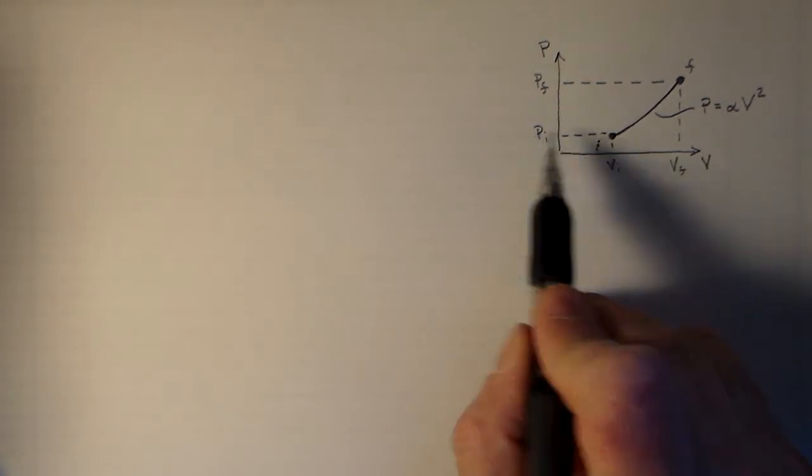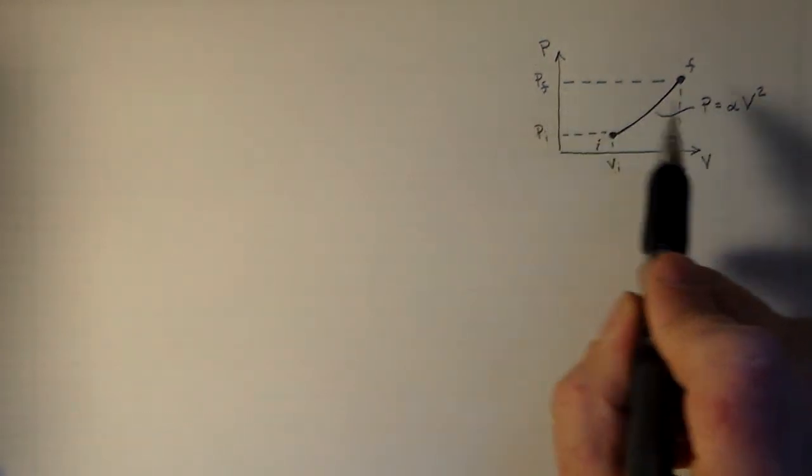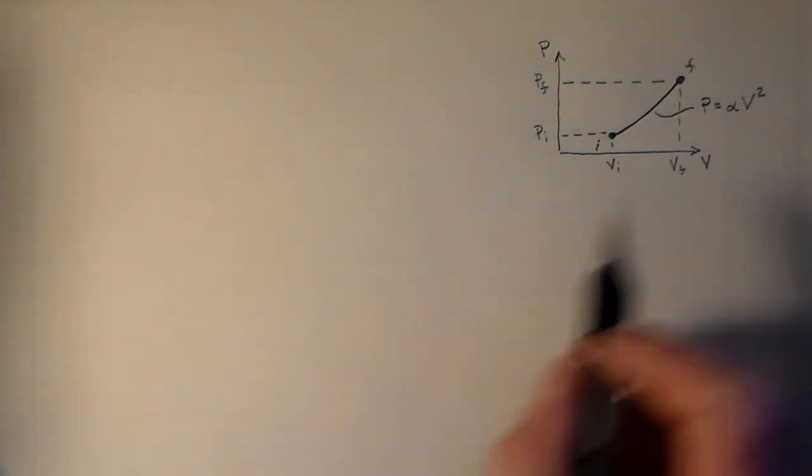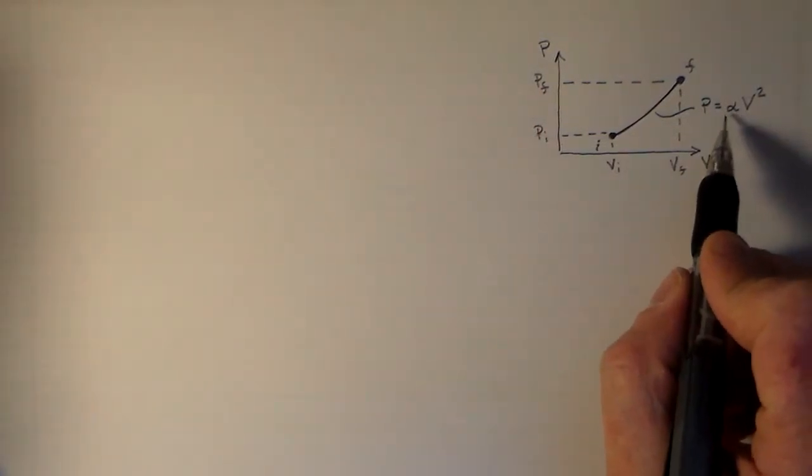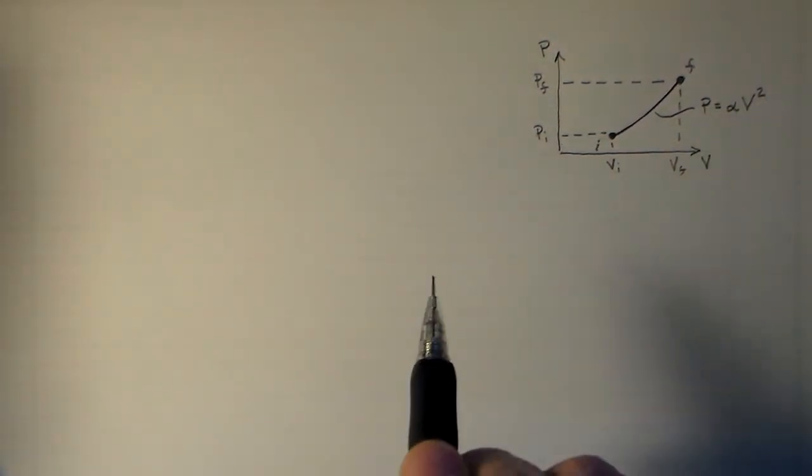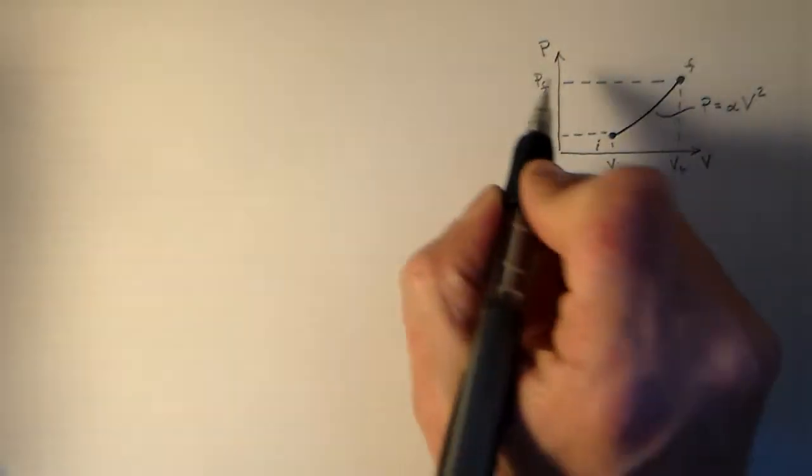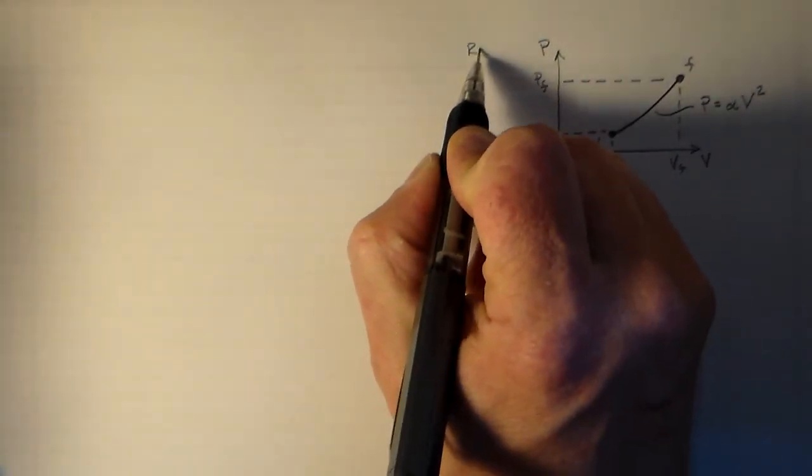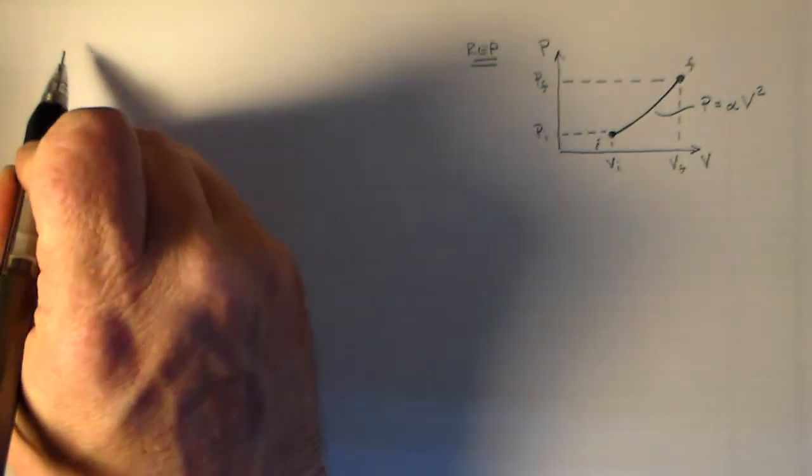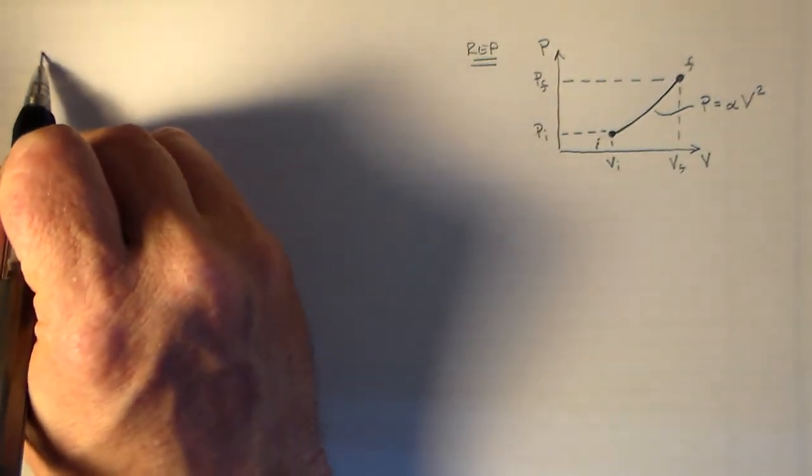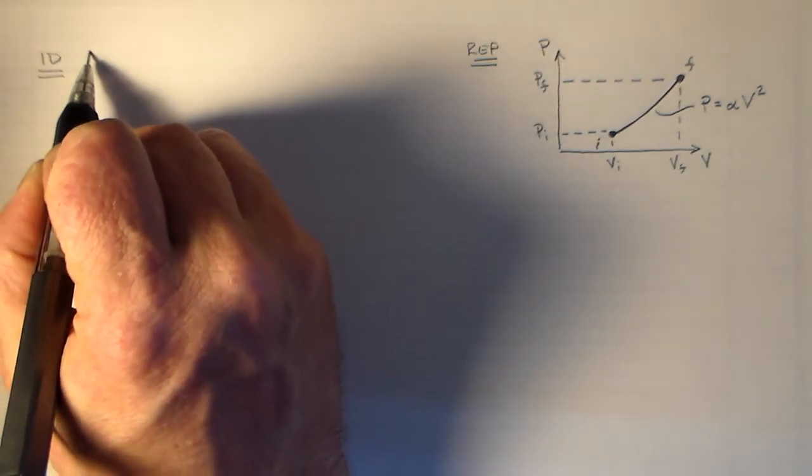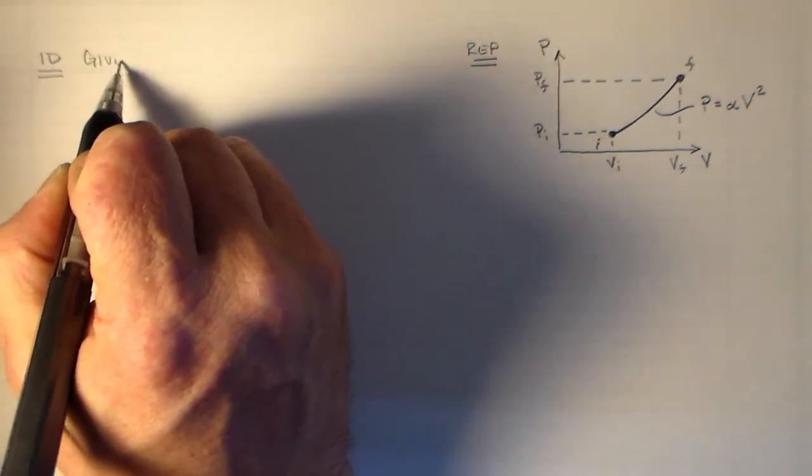So we've got an initial pressure, an initial volume, a final pressure, a final volume, and some constant here, alpha. This constant defines this process. So that's a good representation of what's going on. We'd like to have some kind of way to identify various processes.